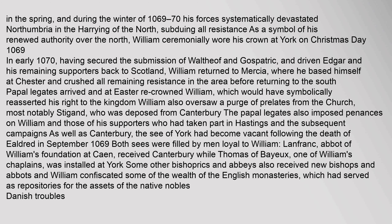In early 1070, having secured the submission of Waltheof and Gospatric, and driven Edgar and his remaining supporters back to Scotland, William returned to Mercia, where he based himself at Chester and crushed all remaining resistance in the area. Papal legates arrived and at Easter re-crowned William, symbolically reasserting his right to the kingdom. William also oversaw a purge of prelates from the church, most notably Stigand, who was deposed from Canterbury. Both the sees of Canterbury and York were filled by men loyal to William. Lanfranc, abbot of William's foundation at Caen, received Canterbury, while Thomas of Bayeux was installed at York.